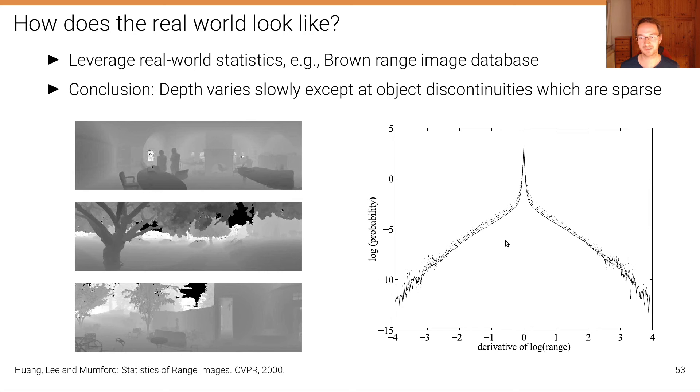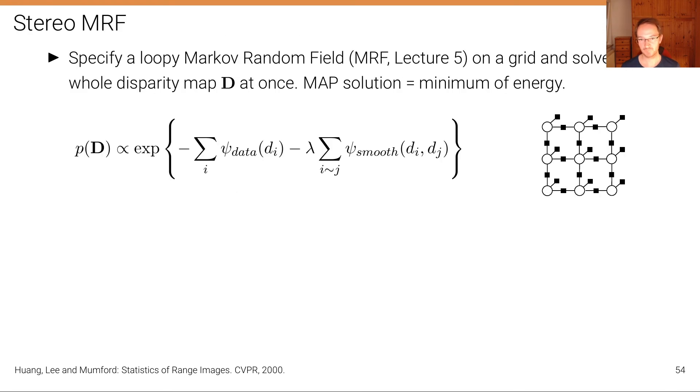And that's also reflected in this plot here where we can see that there is a peak at zero. And that means that for most of the pixels, the change is very smooth, change is very slow in terms of depth. But then there is a heavy tail here, which means there is some pixels, much less it's a log scale here, but there's some pixels for which we do have a significant gradient in the depth map. And so now we want to incorporate the constraint into the disparity estimation process.